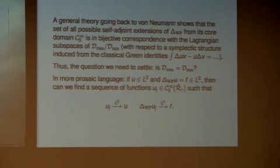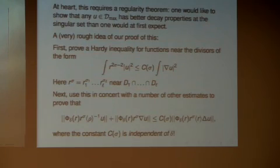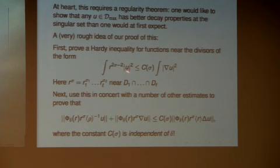In trying to prove this self-adjointness property for the scalar Laplacian on the crossing cusp space, we resort to techniques that are very non-parametrix based. This is one reason I wanted to talk about this theorem — to show you some other types of techniques. This is really a basic technique in real analysis: Hardy inequalities. If you're in R^n, for example, the classical Hardy inequality says, if the origin is zero, then the integral of r^{-2} times |u|^2 is less than or equal to some specific constant times the integral of |grad u|^2.